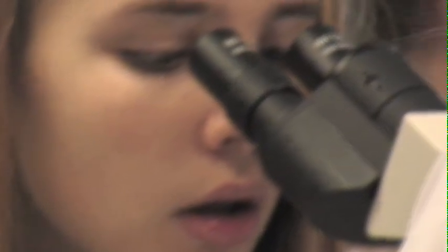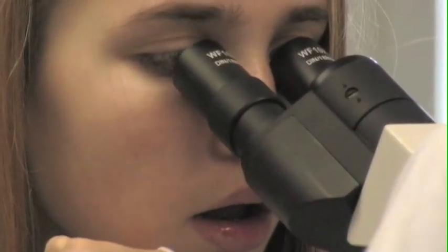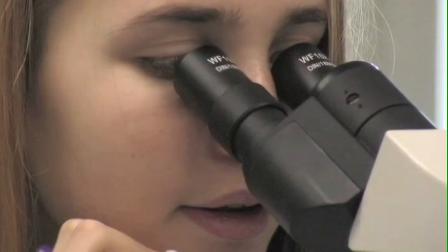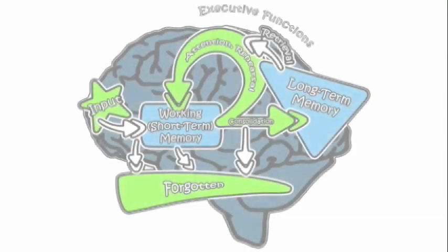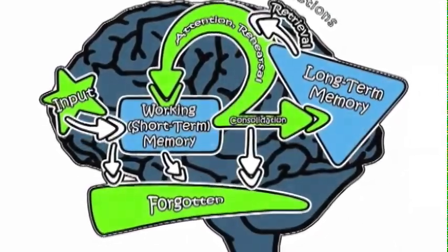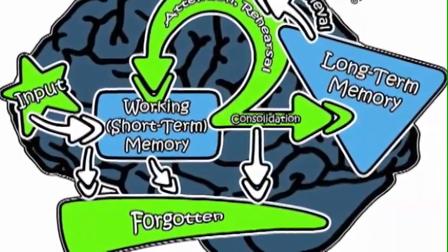Information processing is an important component of learning and memory. In fact, if new information isn't processed, it won't lead to permanent new memories and learning will simply not occur. On the other hand, the more extensively new information is processed, the better it will be remembered. The steps involved in the import and processing of new information is summarized in what we refer to as the information processing model.